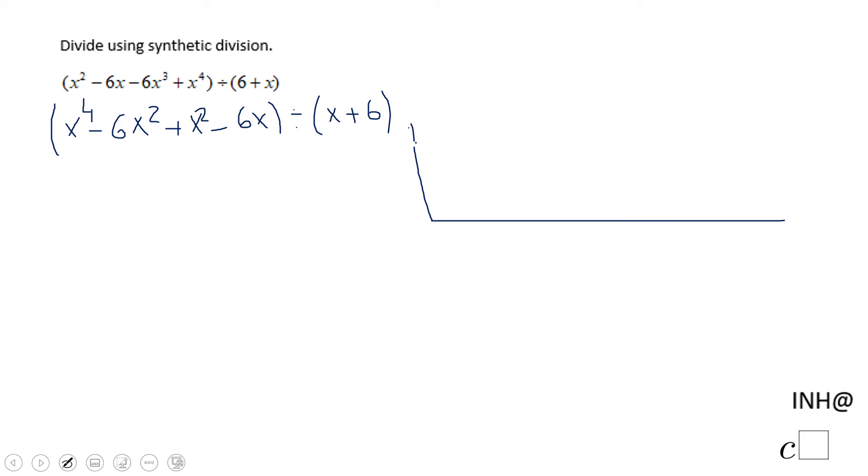x to the fourth power that means a 1. This was a 6x cubed. So we're gonna have a negative 6 plus x squared. So that means we have a 1 minus 6x. That means we have a negative 6 and we're gonna put a 0. We don't have that last term but we're gonna put a 0 there.